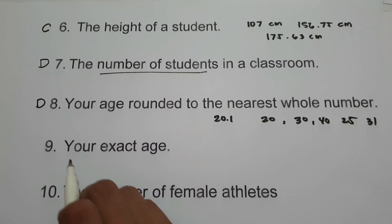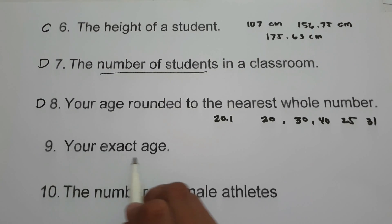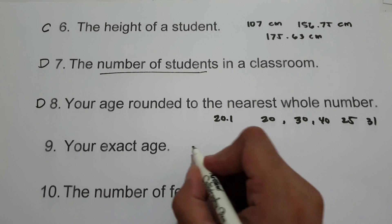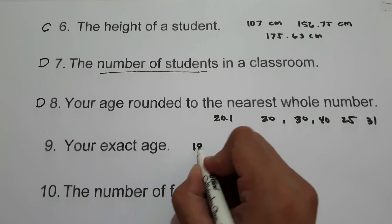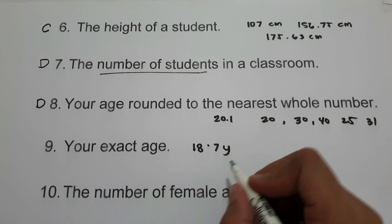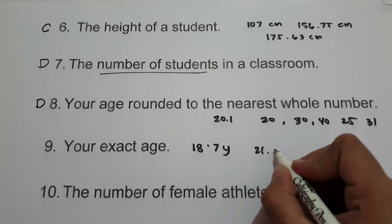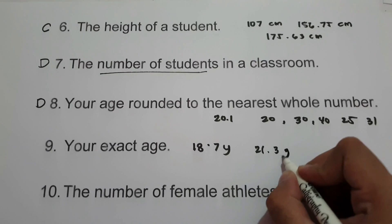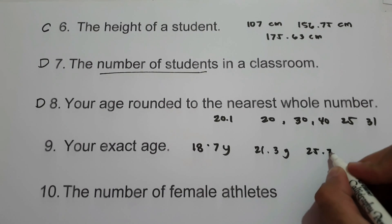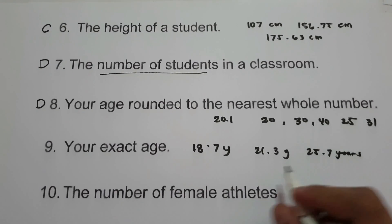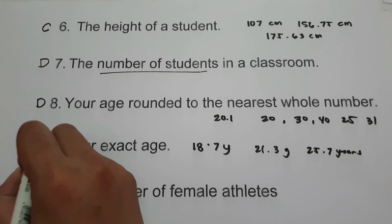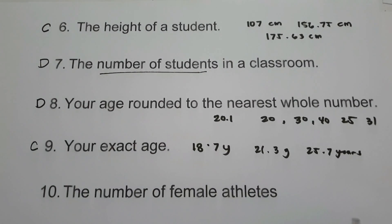But on number 9, when you are talking about your exact age — for example, your exact age is 18.7 years, 21.3 years, or 25.7 years — this is an example of continuous random variable.